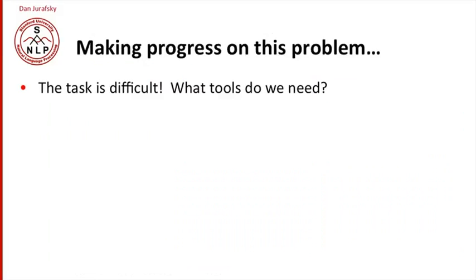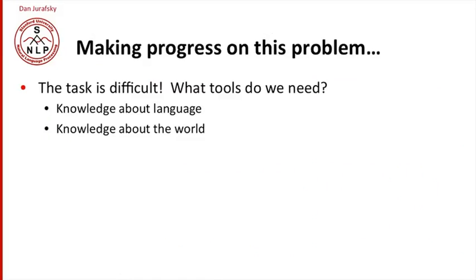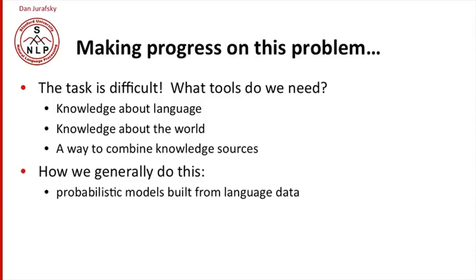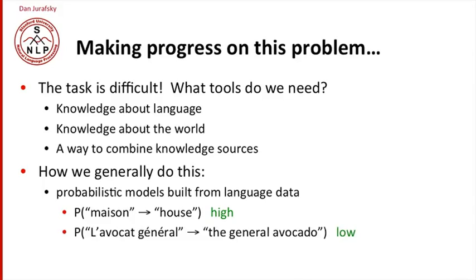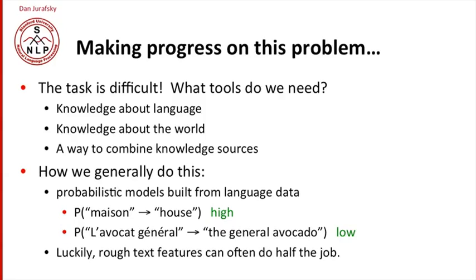The task of natural language understanding is very difficult. What tools do we need? We need knowledge about language, knowledge about the world, and a way to combine these knowledge sources. Generally, we do this using probabilistic models built from language data. For example, if we see the word 'maison' in French, we're very likely to translate it as 'house' in English. On the other hand, 'avocat général' in French is very unlikely to translate as 'the general avocado.' Training these probabilistic models can be very hard, but we can do an approximate job with rough text features, which we'll introduce as we go.